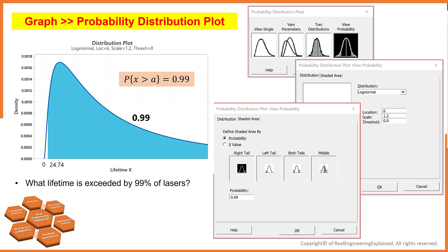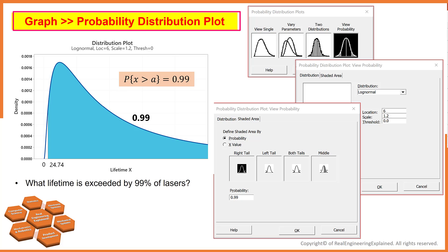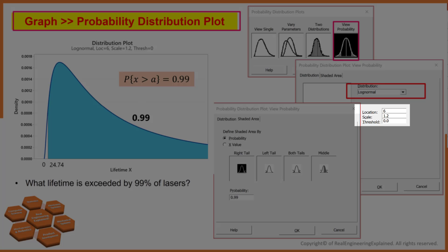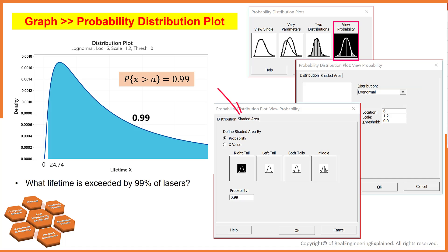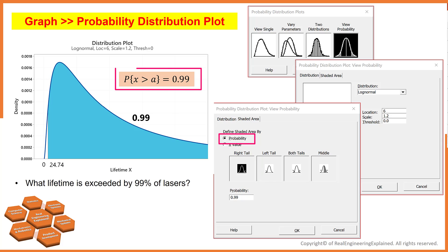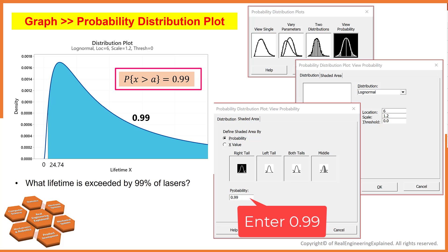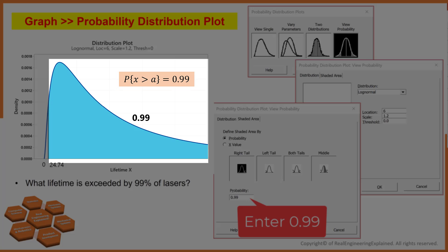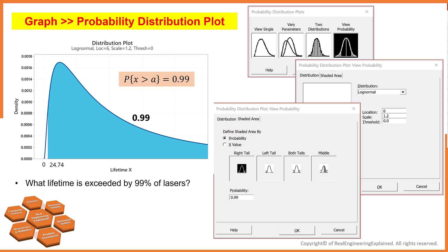Let's answer the second question. Go to Graph and then Probability Distribution Plot and select View Probabilities. Select Log Normal and input 6 for the location parameter and 1.2 for the scale parameter omega. Then go to the Shaded Area tab, select Probability, and select Right Tail since we are looking for the lifetime exceeded by 99% of lasers. The result says that 99% of lasers exceed a lifetime of 24.7 hours.